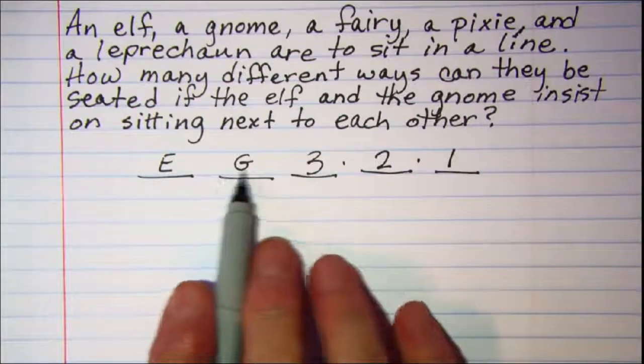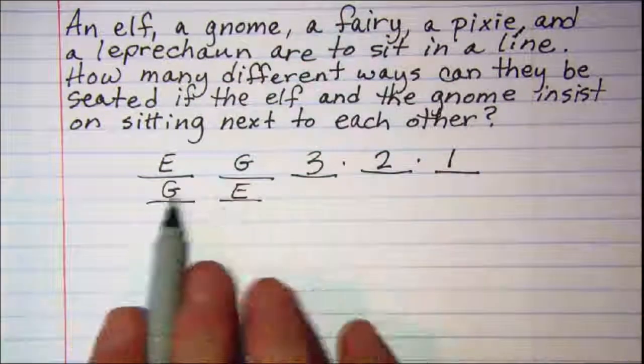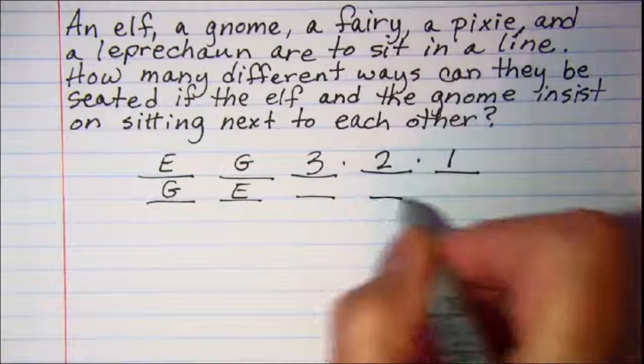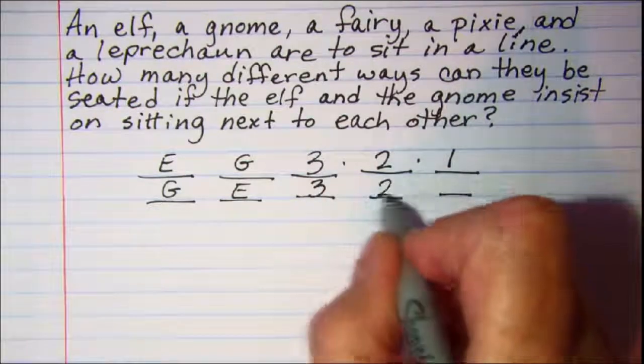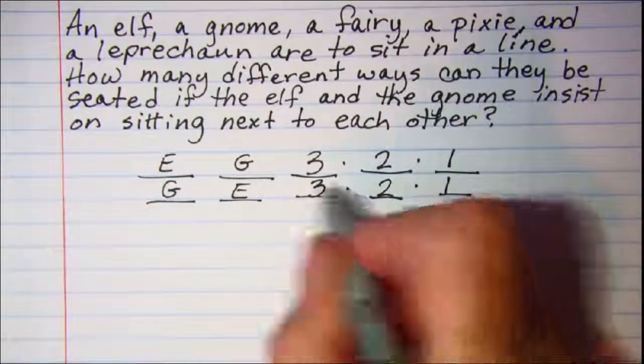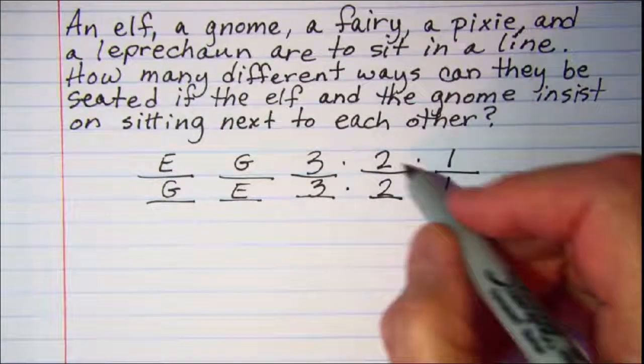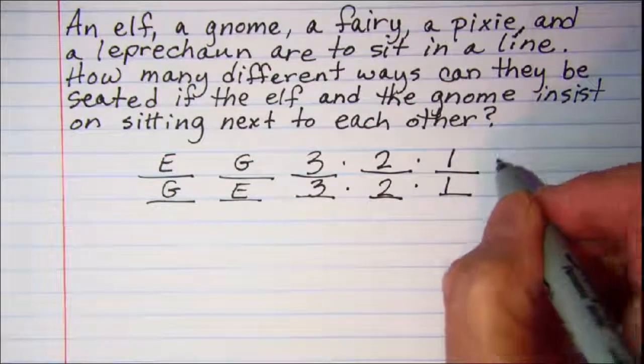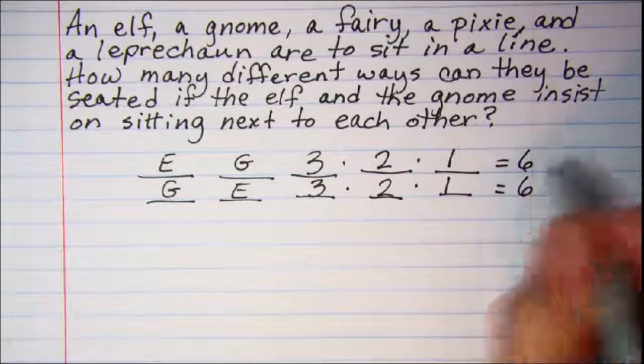Alright, then we need to consider what if they switched chairs. So again we have three, two, and one here. So this is six for this one, and six for this one.